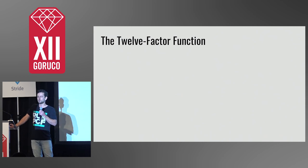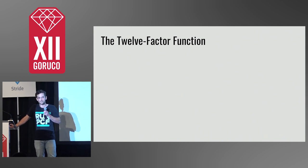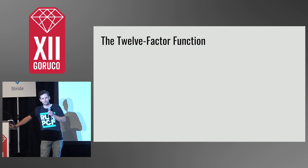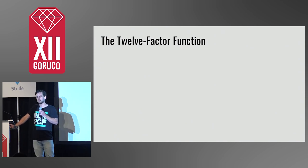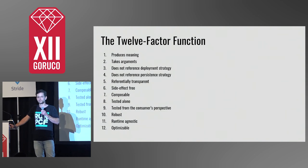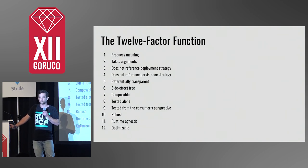I chose the word meaning partly because it's so problematic in software and I want this word choice to bother you two hours from now. The 12-factor function says that if you isolate your meaningful code in functions that meet these criteria, then you'll be able to change the meaning of your software with minimal impact on the magic that moves information.